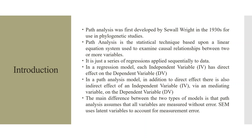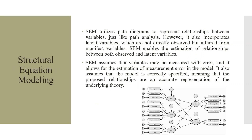The main difference between the two types of model is that path analysis assumes that all variables are measured without error. SEM uses latent variables to account for measurement error. SEM utilizes path diagrams to represent relationships between variables, but it also incorporates latent variables which are not directly observed but inferred from the manifest variables. SEM enables the estimation of relationships between both observed variables and latent variables.